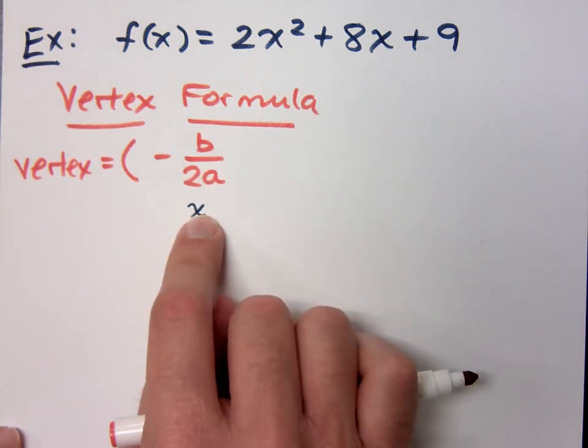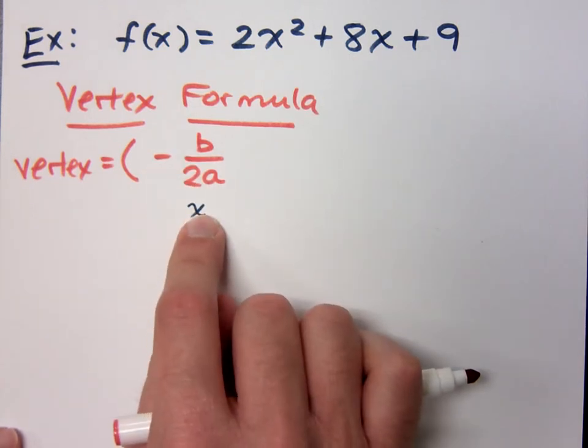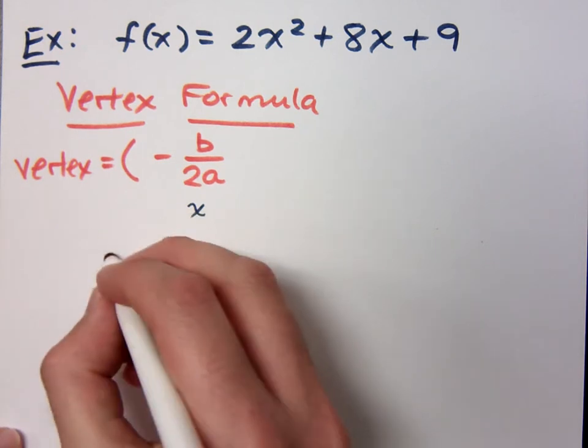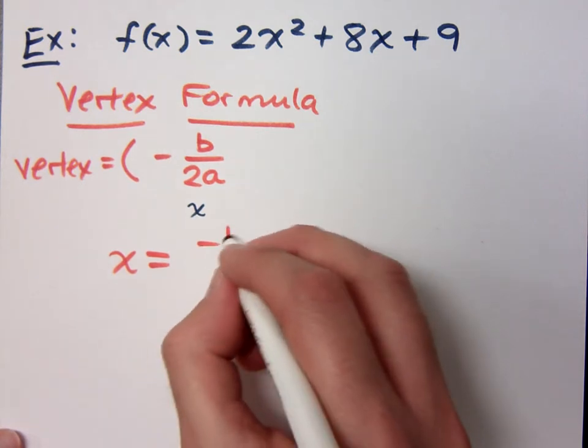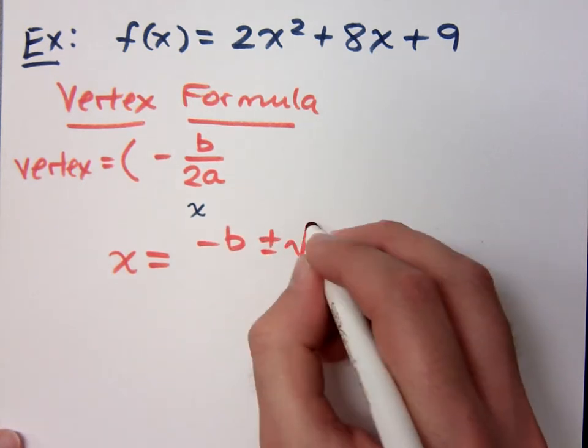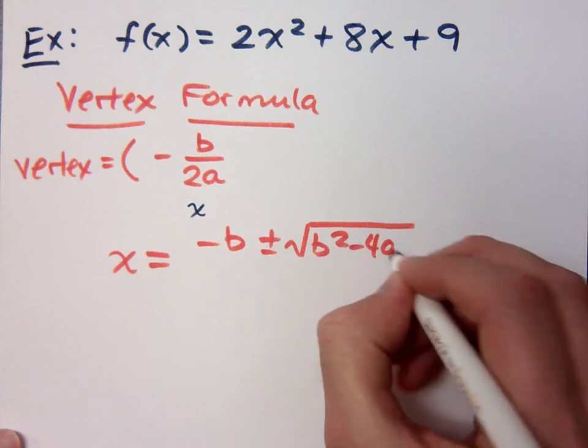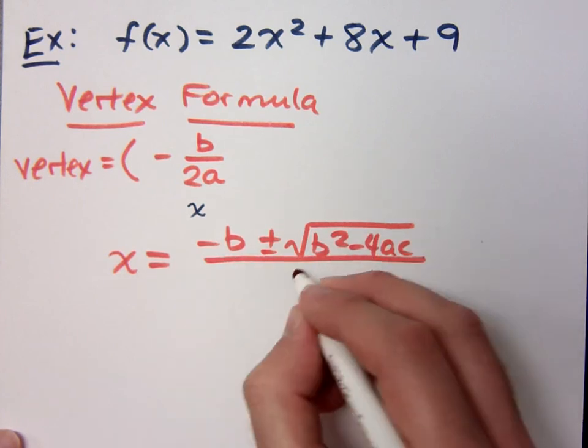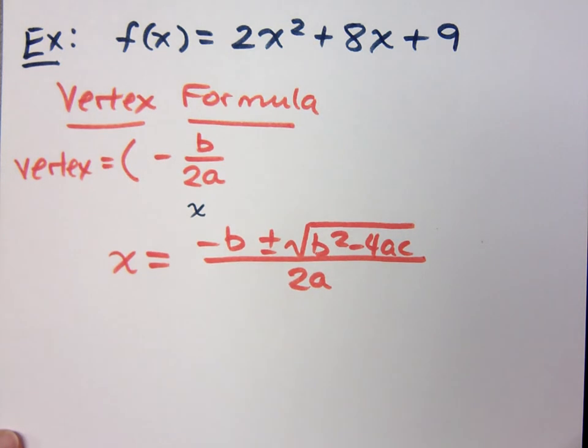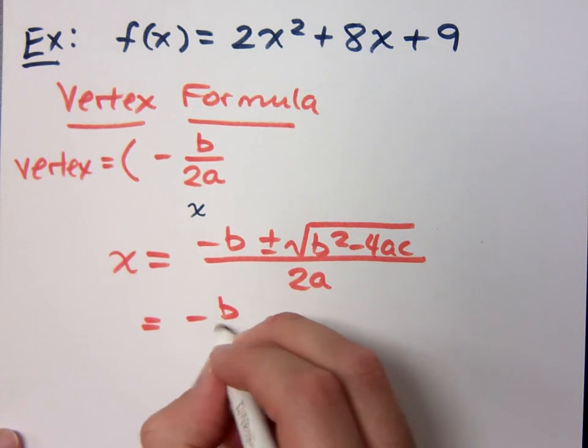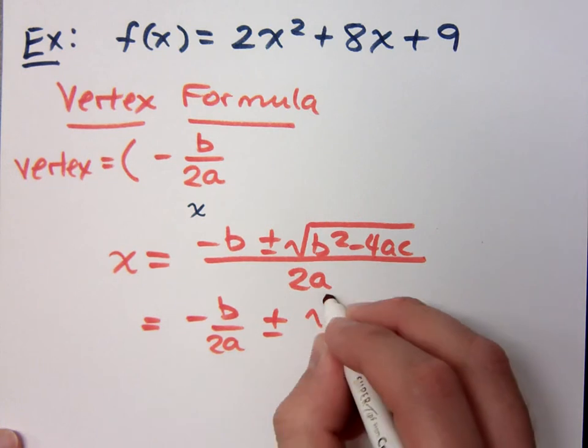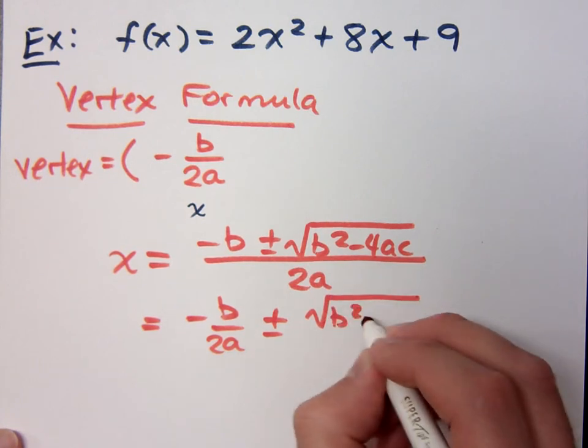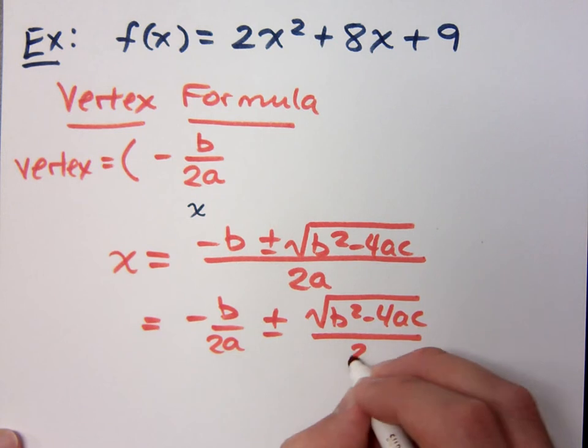Now, does this b over 2a look familiar to you at all? Yeah. Where have you seen that before? Exactly right. If you remember the quadratic formula, how does that go? You can sing it if you want to. No, that's not right. It's negative b plus or minus the square root of b squared minus 4ac all over 2a. That's the quadratic formula, right? Now, this is what I want to do so you can see what's going on here. I can separate this and say negative b over 2a plus or minus square root of b squared minus 4ac, and that guy's over 2a.